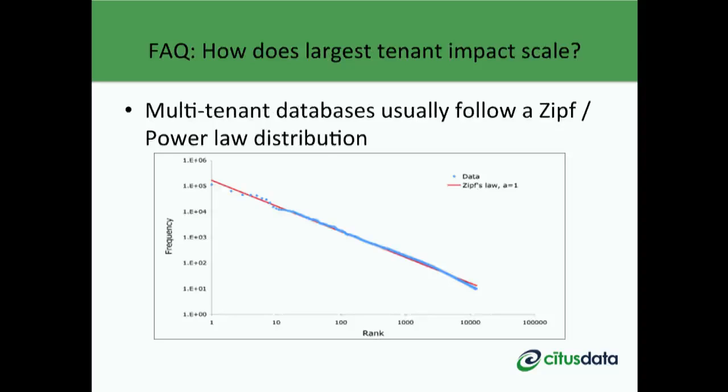Before wrapping up, I wanted to touch on a question we hear frequently: how does your largest tenant affect your scaling properties? Tenant data in multi-tenant databases typically follows a Zipf distribution — a few popular tenants and then a long tail. You may know this as power law, Pareto distribution, or the 80-20 rule. This graph displays a standard Zipf distribution, plotted on a log-log scale, where tenants are sorted by number of occurrences in the database.